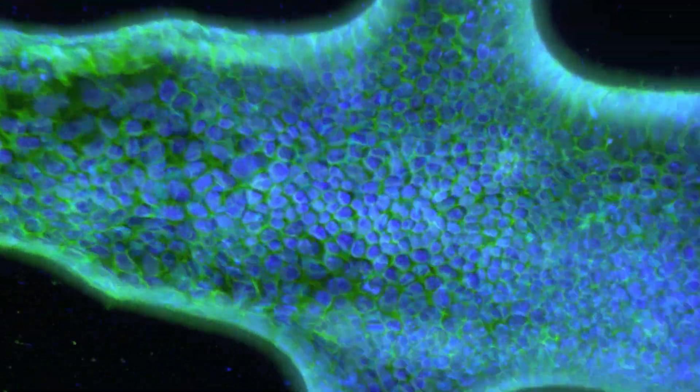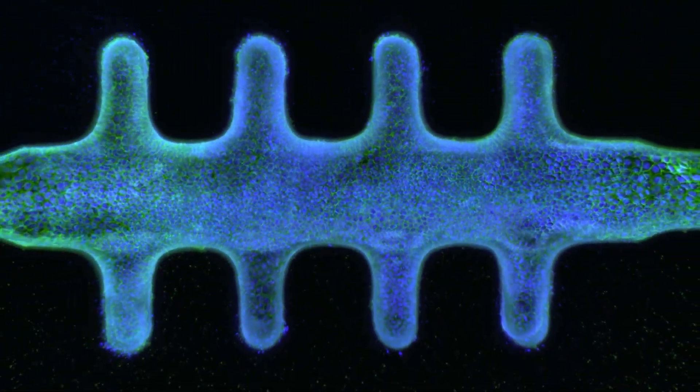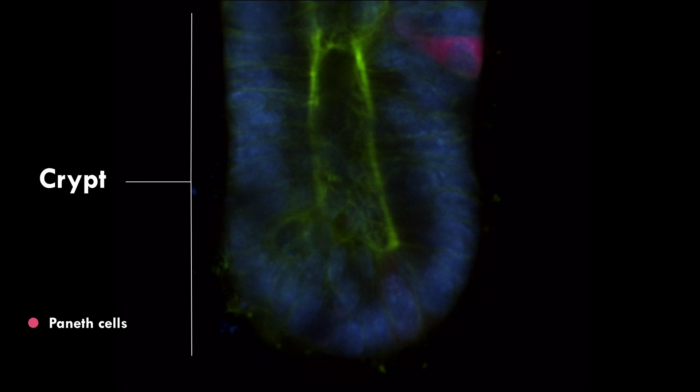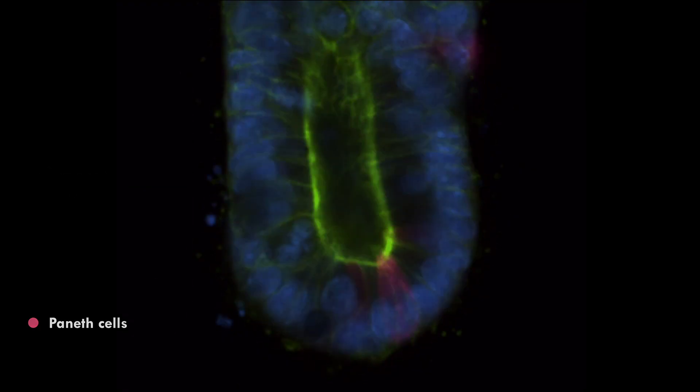Key intestinal cell types in the mini guts are spatially organized strikingly similar to the real intestine, with stem cells and paneth cells residing in the crypts, while enterocytes and other specialized cell types are located in the lumen.